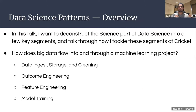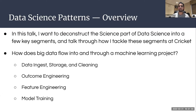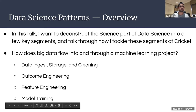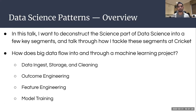I want to deconstruct the science part of data science into a few key segments: how big data flows into a machine learning project — the ingest, storage, and cleaning, what kinds of technologies are used — and then these new ideas of outcome engineering and feature engineering, and model training. How can we leverage technology to do those in fast, efficient, and HIPAA-compliant ways? Sometimes we just exceed the scale of what's possible on our own computers.